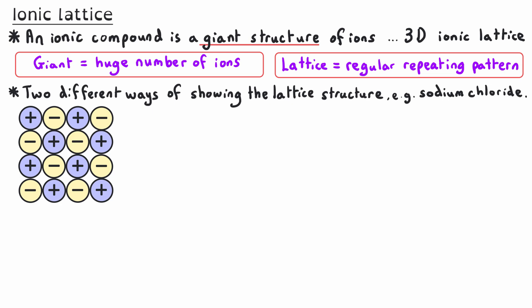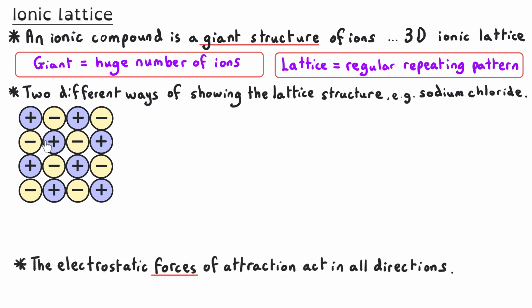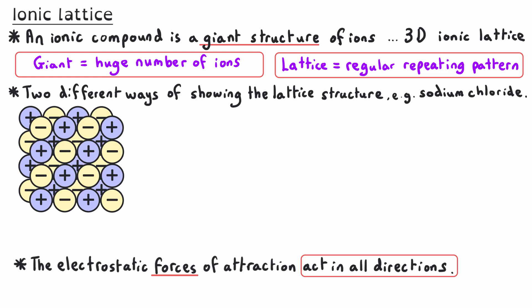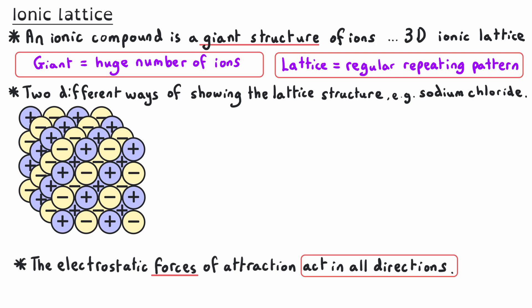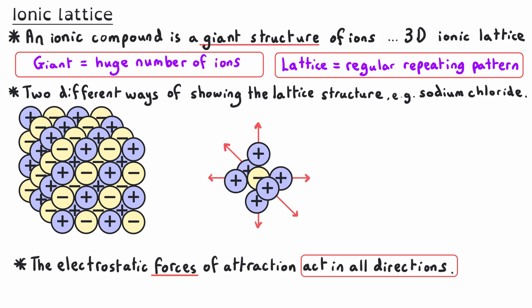The electrostatic forces of attraction between these oppositely charged ions act in all dimensions. You can see that this ion has got four oppositely charged ions around it in the same plane in two dimensions. If we gradually introduce another layer and another layer, this pattern doesn't just repeat in two dimensions — it repeats in three dimensions as well. So every ion will actually have six oppositely charged neighbors, and those electrostatic forces of attraction act between that ion and all six of its neighbors.